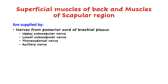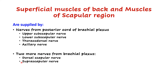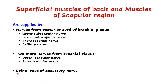This is very simple to remember — subscapular, then thoracodorsal for the posterior thoracic region, and the axillary nerve. Two more nerves supply here: dorsal scapular nerve and suprascapular nerve. Dorsal scapular nerve is a direct branch from the root of the brachial plexus, that is C5. Suprascapular is a branch of the upper trunk of the brachial plexus.